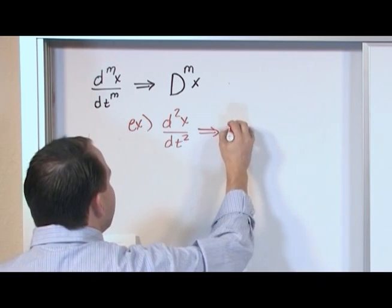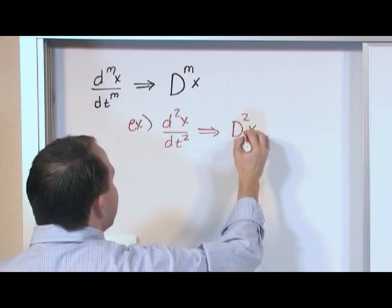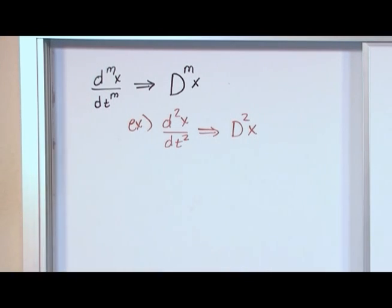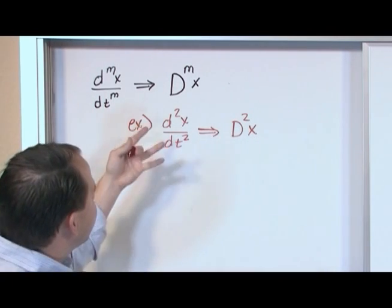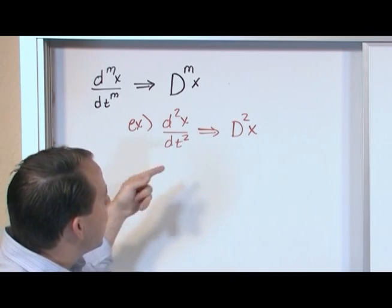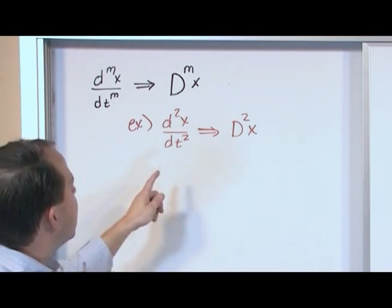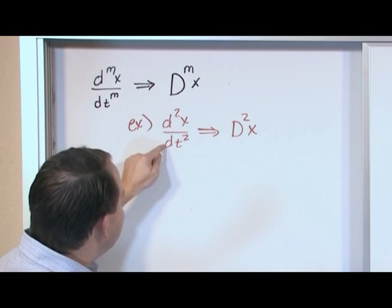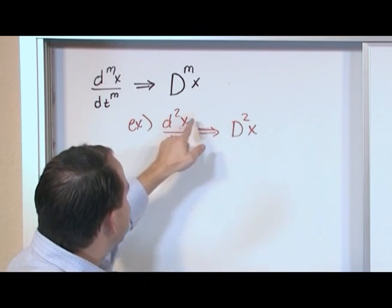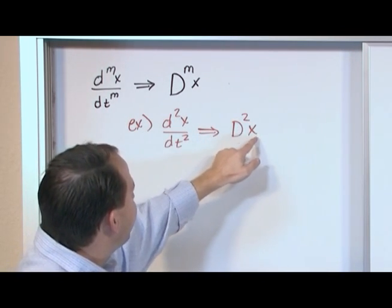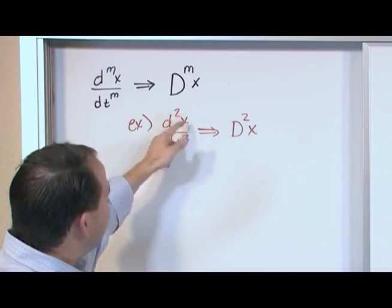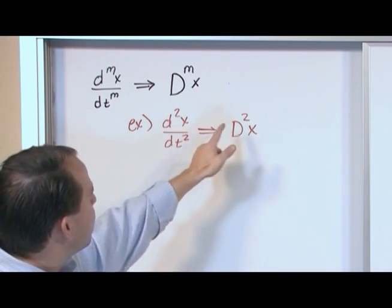Well, if I were going to write it in operator notation, it would be d squared x, and it means exactly the same thing. The capital D means take a derivative, the with respect to time part is implied, just because x is a function of time that we're dealing with. Capital D means d dt basically. The squared means second derivative, and whatever follows, in this case it's x, is just like it is here. It's just sitting there and you're operating on x.